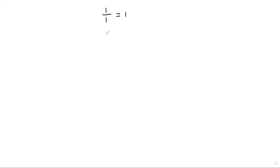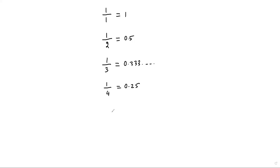Here I divide the number one by one — it results one. Again I divide the same number one by two — it results zero point five. I divide one by three — it results zero point three three three, and it keeps going. I divide one by four, I get zero point two five. I divide one by five, I get zero point two.